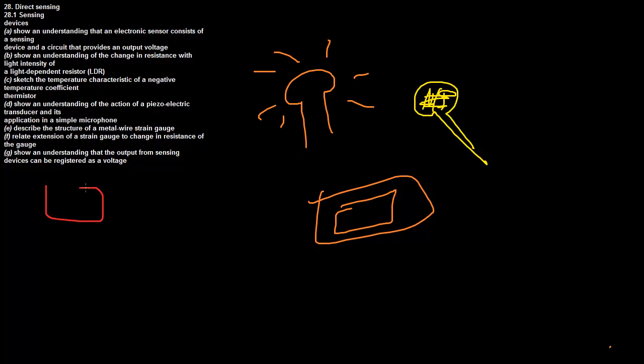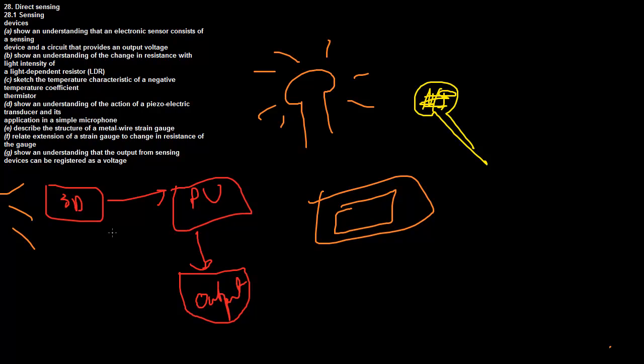They normally work like this: we have a sensing device which changes its properties depending on a change in the environment. So a change in light intensity might change the resistance of a component. This goes to a processing unit which converts this physical change into one we can understand, and this is given out as an output. As an example, the light in a room might get brighter, the resistance might drop to 10 ohms, the processing unit sees the resistance is now 10 ohms, that means the light is now say 20 lux, and the output will say we have a light intensity of 20 lux. That's how all sensing devices work in the fundamental way.